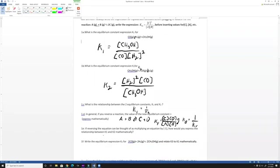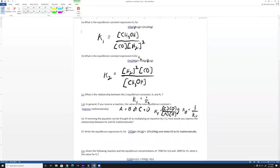For 1E, if reversing the equation can be thought of as multiplying it by negative one, how would you express the relationship between K1 and K2 mathematically? For equilibrium, reversing a reaction does not mean multiplying the equilibrium constant by negative one. That was true for Hess's law, but not here. Simply, it would be K1 equals negative K2. I don't really like this question, but it's just conceptual.